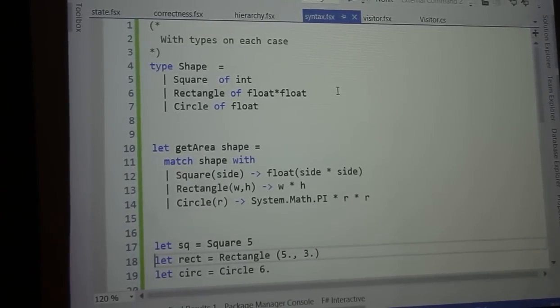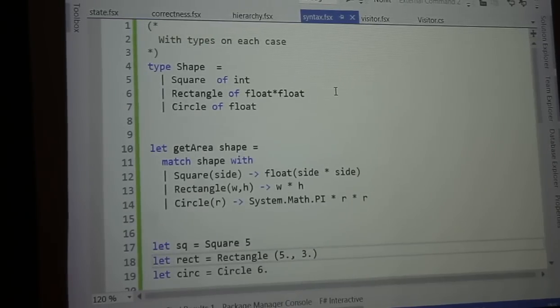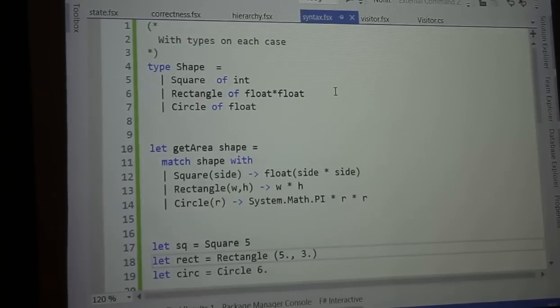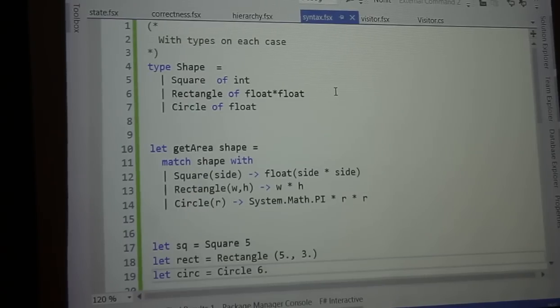A rectangle is a tuple of two floats. So, that's a width and a height. You can see five and a three. And a circle is a float, and that would be the radius. So, six is the radius there. These are instances or values of the discriminating union.